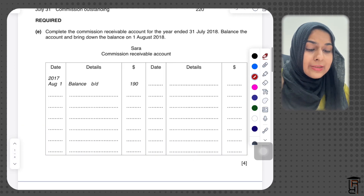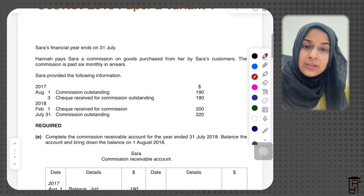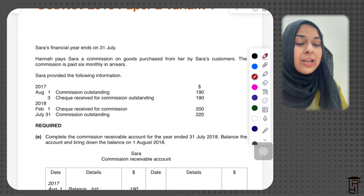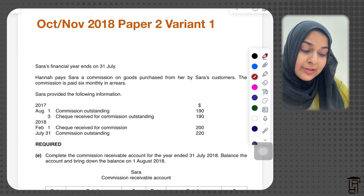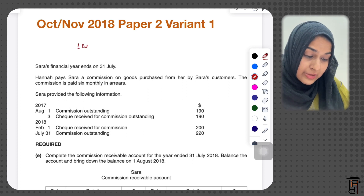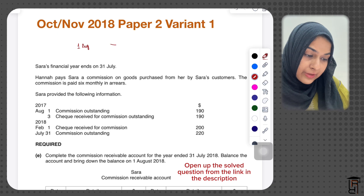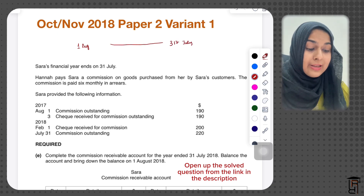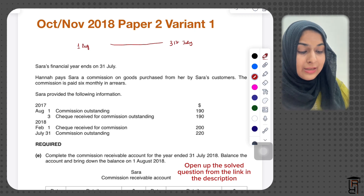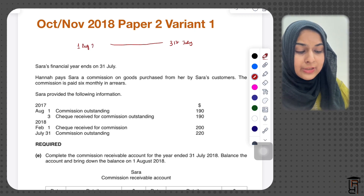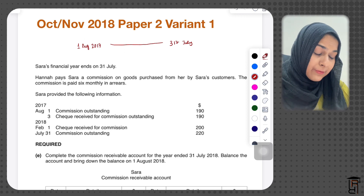Sara's financial year ends on 31st July. The year under consideration is starting from 1st August and ends on 31st July. So that's Sara's financial year in this question — they are basically considering 1st August 2017 to 31st July 2018.